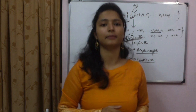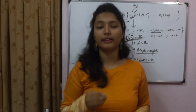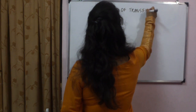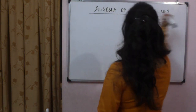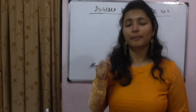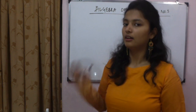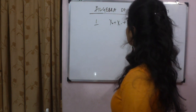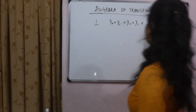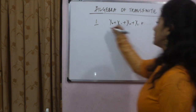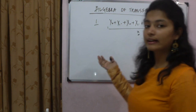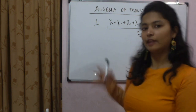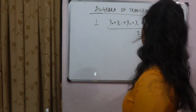Now let's look at the algebra of transfinite numbers — how we add, subtract, and deal with exponential operations involving ℵ₀ and c. First: if we add ℵ₀ some finite number n times, the result is still ℵ₀. Adding a finite number of copies of ℵ₀ doesn't change it.